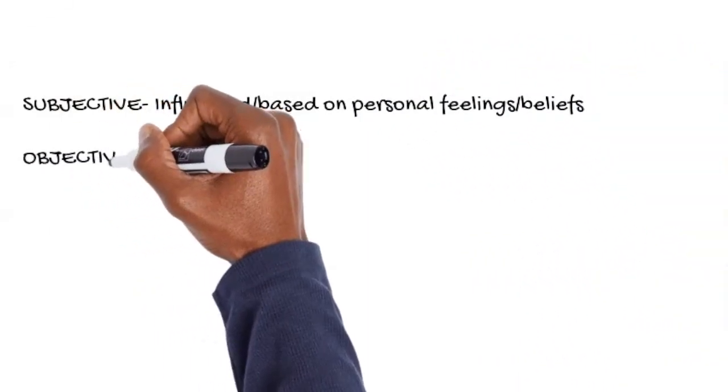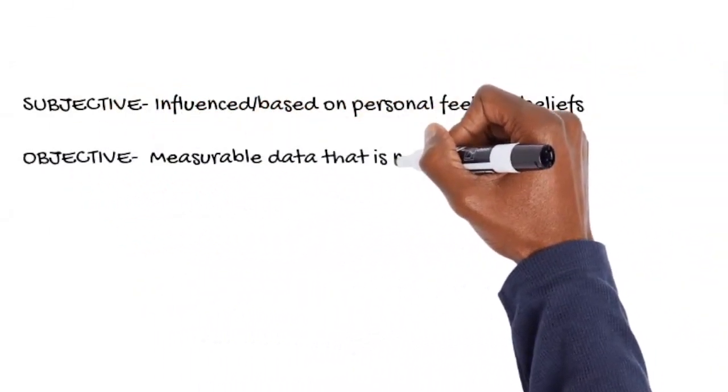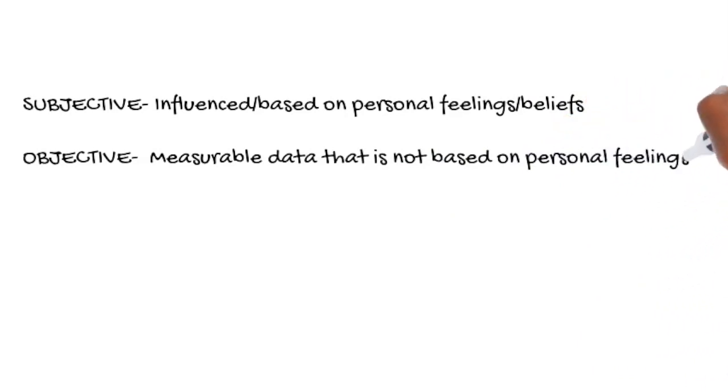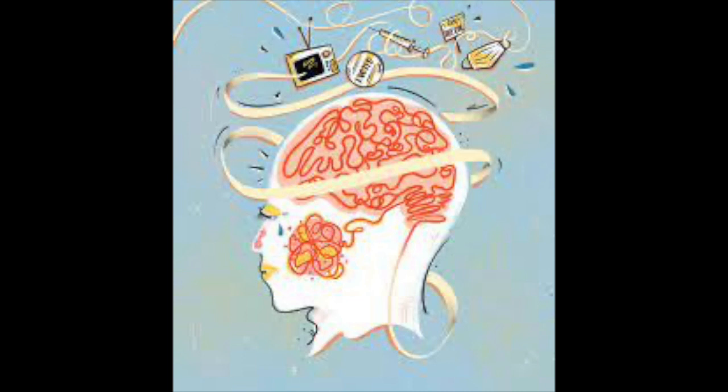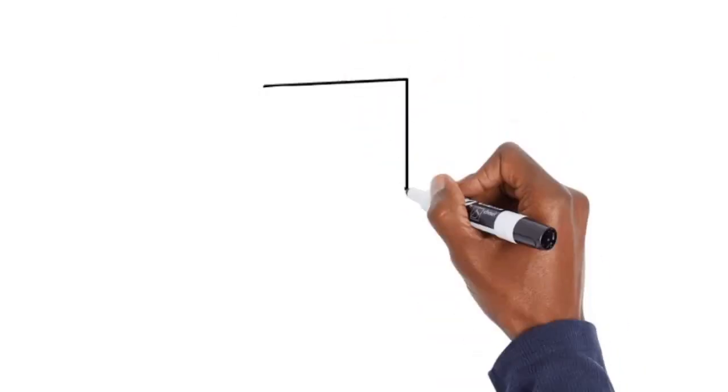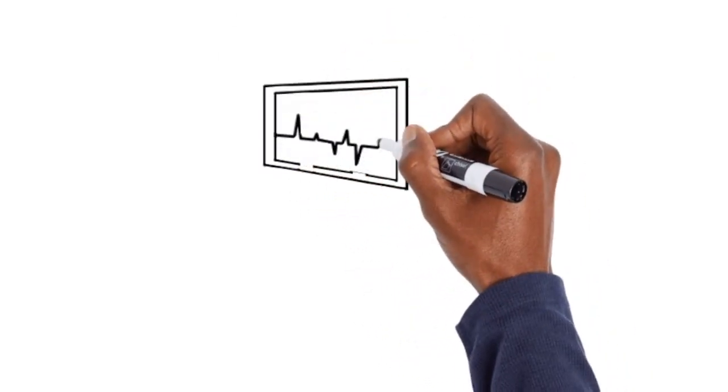For example, the patient would typically describe in their own words how bad the stress level has been and the presence or absence of any other symptoms associated with the stress such as headache, blurry vision, or shortness of breath. While the healthcare provider measures some objective data such as heart rate or blood pressure to get a better idea of the severity of the stress level.